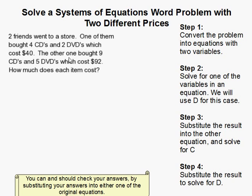How to solve a systems of equation word problem with two different prices. I'll start off by reading the problem.